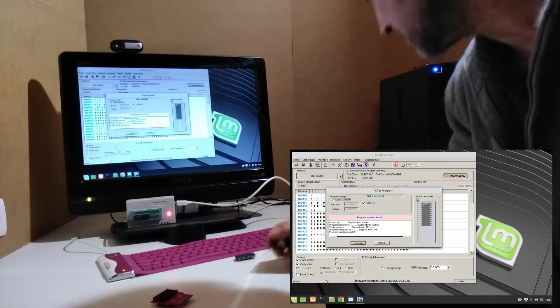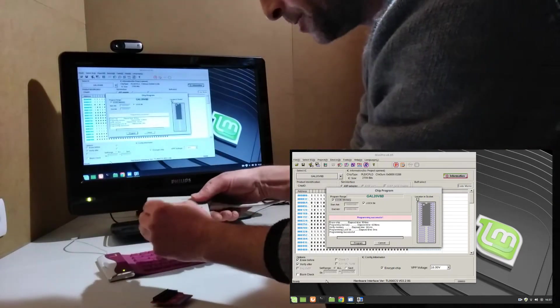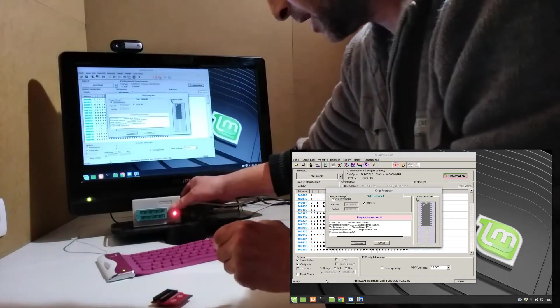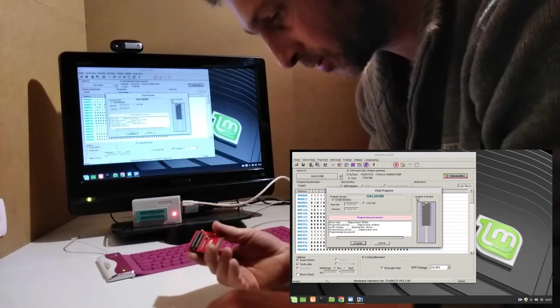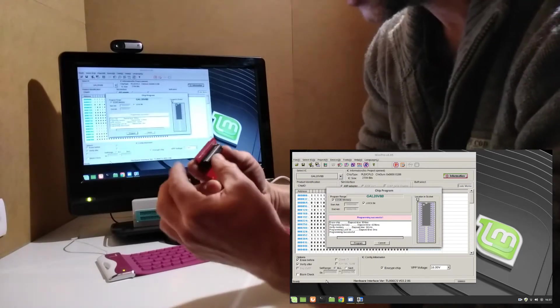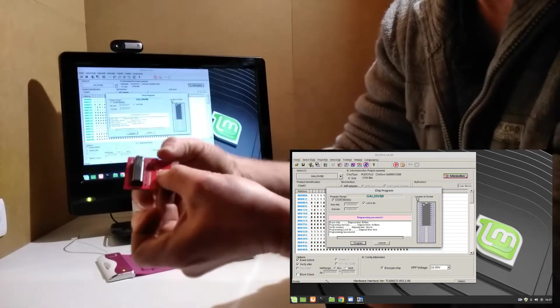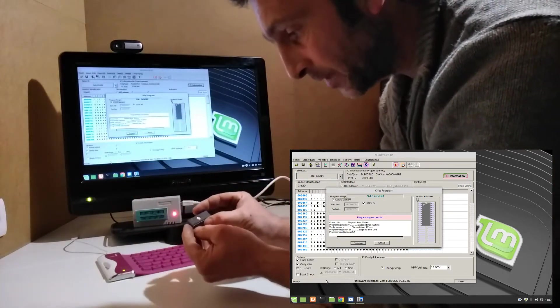So all I need to do now is remove this chip and insert it into my cartridge, just making sure that I put pin one at pin one. There we go, and that guy will push in and out.